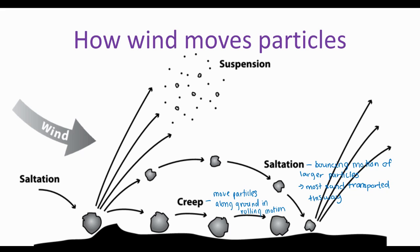Our smaller soil particles like silt and clay can be suspended in the air, and because of that they can travel for longer distances. So suspension is the third way that wind moves particles. In suspension, small particles stay airborne for long distances.